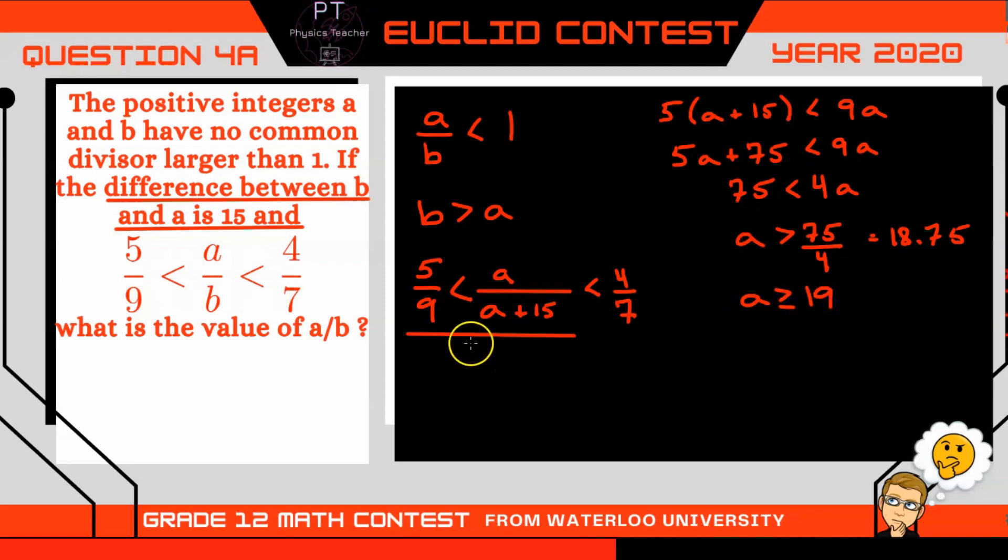Alright, so after evaluating this left portion of the inequality, I know A is greater than or equal to 19.